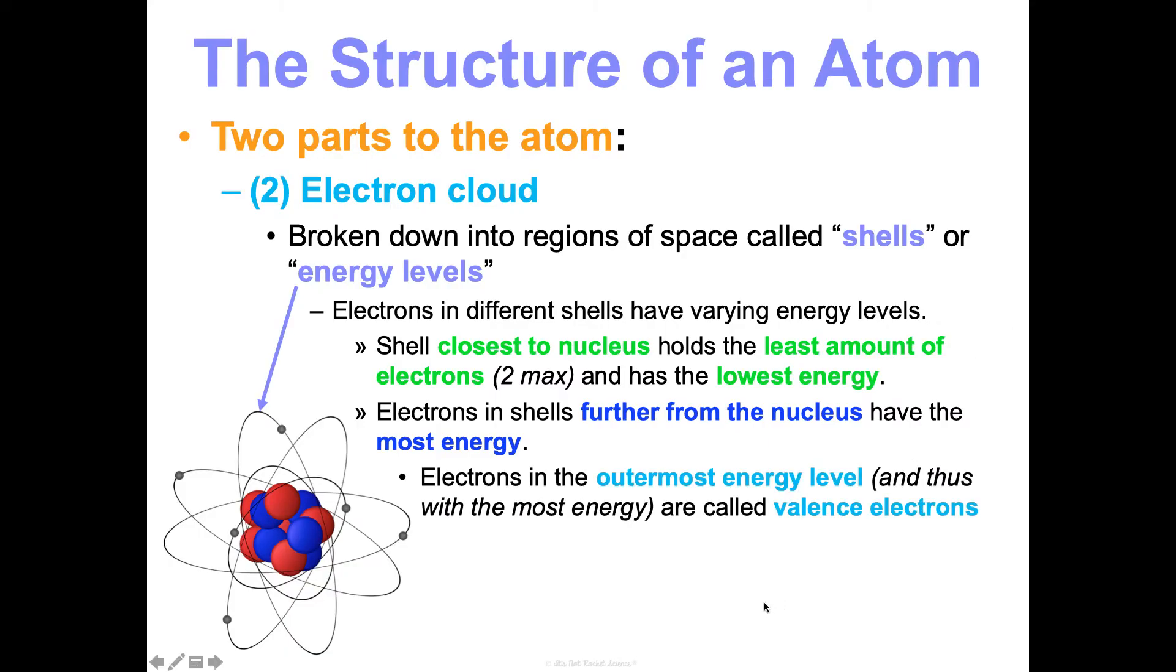Valence electrons are so important, like I said, when it comes to bonding behavior. And so we're going to talk about this a ton in future units as we talk about the formation of compounds. But I want you to get familiar with this now. And we'll talk a lot more about the arrangement of the electron cloud and what that looks like in unit three, which is the electron. So unit three is going to be all about electrons in a lot more detail. But this is what you need to know for now in terms of the structure of the atom.